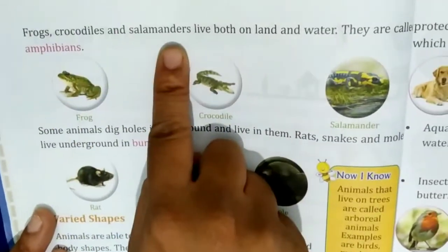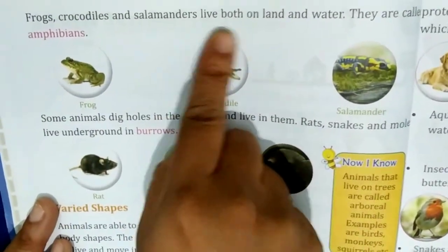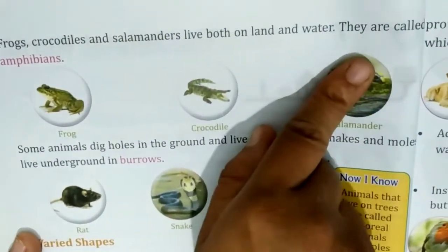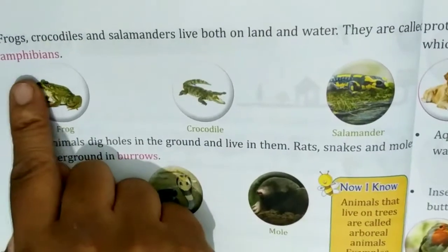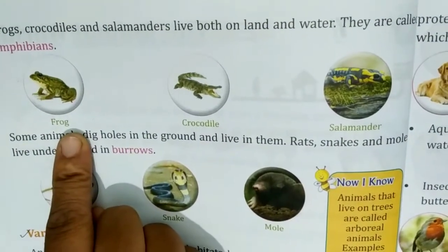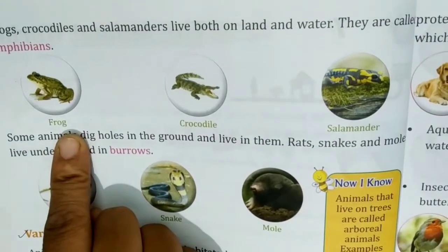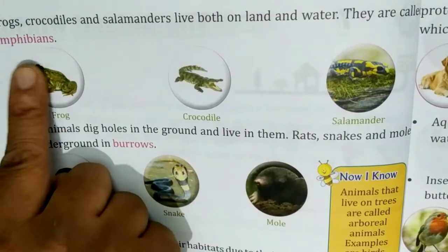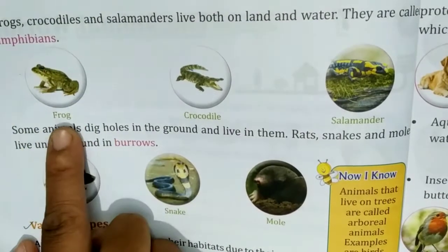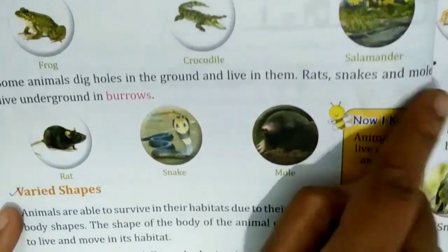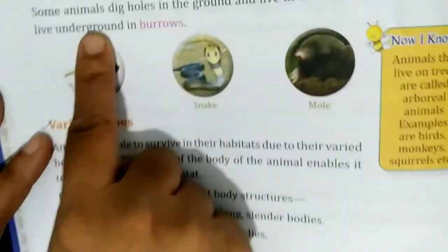Frogs, crocodiles and salamanders live both on land and in water. They are called amphibians. Frog, crocodile and salamander are examples of amphibians.